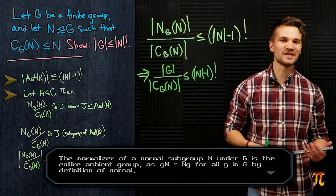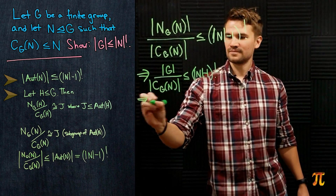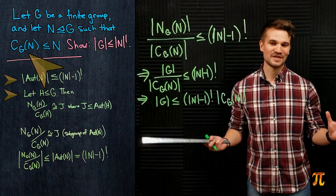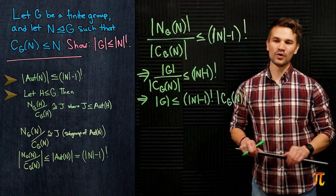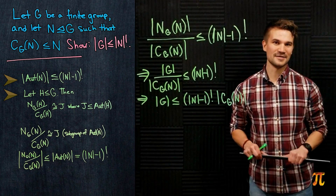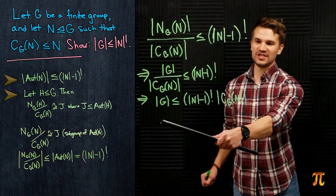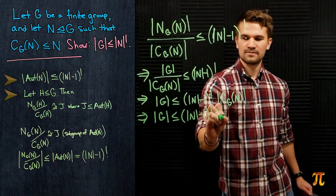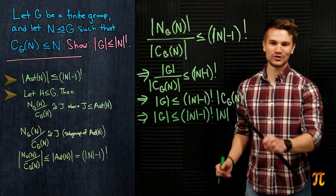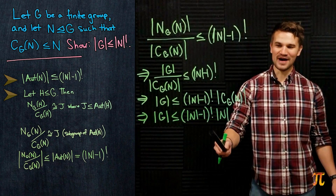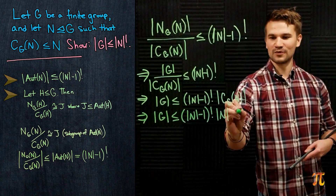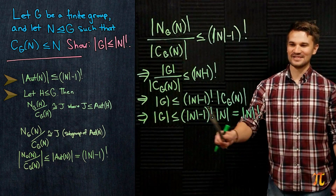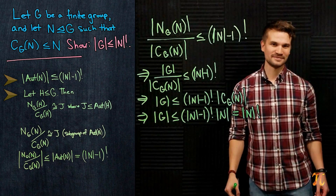Multiplying both sides by |C_G(N)|, we get |G| ≤ |C_G(N)| · (|N| - 1)!. Now we use the last assumption we haven't used yet: the centralizer of N is a subgroup of N, so |C_G(N)| ≤ |N|. Therefore |G| ≤ |N| · (|N| - 1)! = |N|!, and the proof is complete.